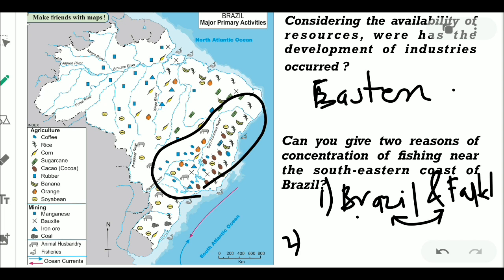There are two reasons for the development of fishing near the south-eastern coast. The first reason is the presence of two ocean currents — the Brazilian current which is warm and the Falkland current which is cold — and the mixing of these two currents creates a good fishing ground. The second reason is the presence of a large continental shelf near the ocean.